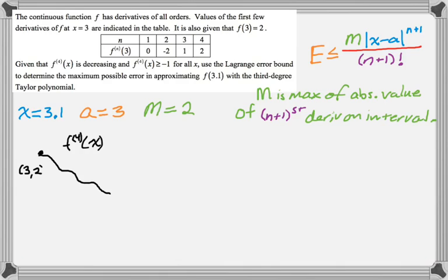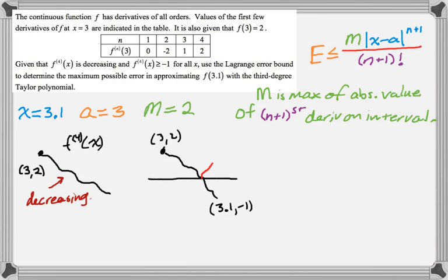So from the table, I know that the fourth derivative goes through the point 3 comma 2. I also am told that the function is decreasing. So kind of logically, if the absolute value part wasn't there, then 2 would have to be the maximum. But m comes from the maximum of the absolute value of the n plus 1st derivative. So what could happen is this: you could go through the point 3 comma 2 and also the point 3.1 comma negative 1. But it's the absolute value, so you would reflect that. So that point now is 3.1 comma 1, and 2 is still the maximum.